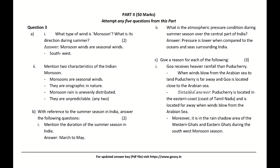Give a reason why Goa receives heavier rainfall than Puducherry. When winds blow from the Arabian Sea, Puducherry is located far away while Goa is close to the Arabian Sea. Moreover, Puducherry is located on the eastern coast of Tamil Nadu and is in the rain shadow area of the Western Ghats and Eastern Ghats during the southwest monsoon season.